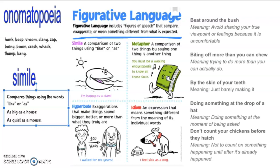Another tool that authors use is onomatopoeia. In the story that we read yesterday, 'Stink and the Freaky Frog Freakout,' there was a lot of onomatopoeia. Onomatopoeia is just words that represent sounds. Examples include: honk, beep, vroom, clang, zap, boing, boom, crash, whack, thump, bang. When we were reading yesterday, there was a little bit of trouble reading those words because they were the sounds of frogs. Those are examples of onomatopoeia — the author puts that in so you can hear those sounds in your mind.